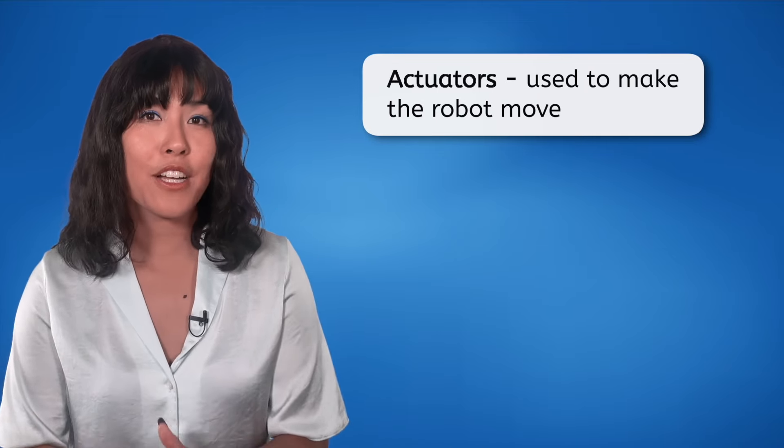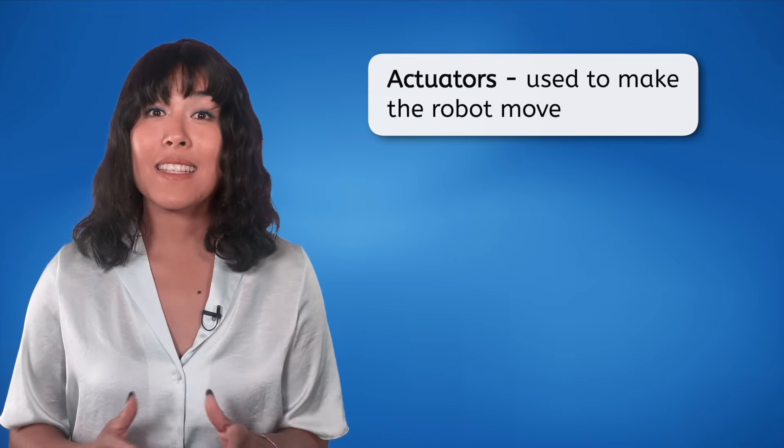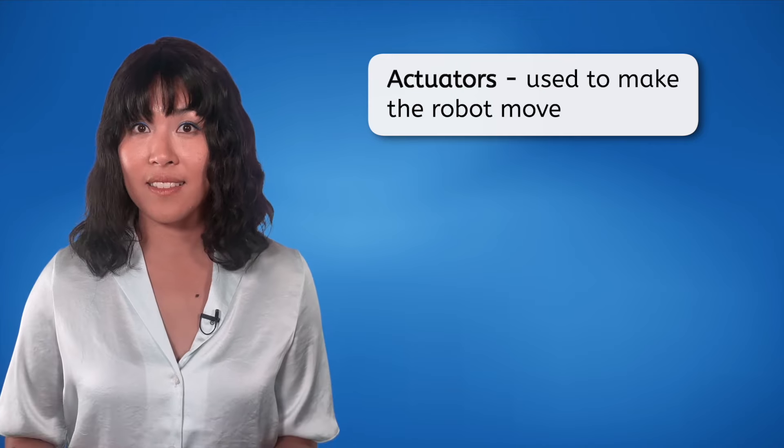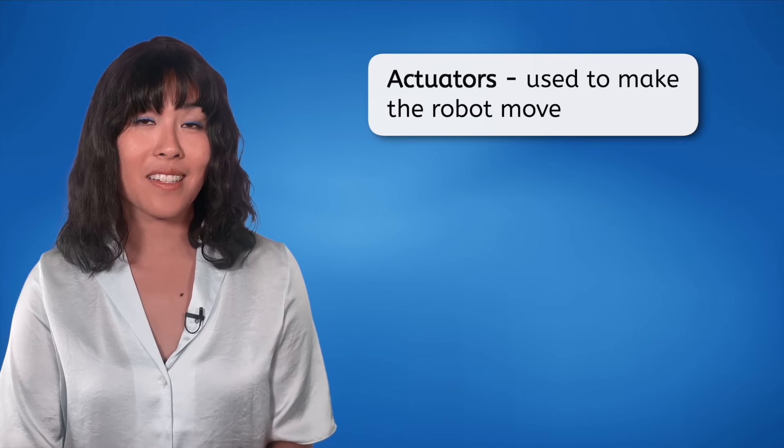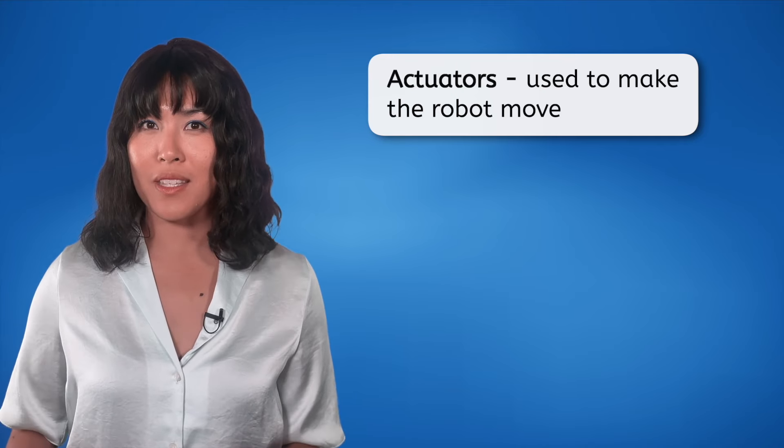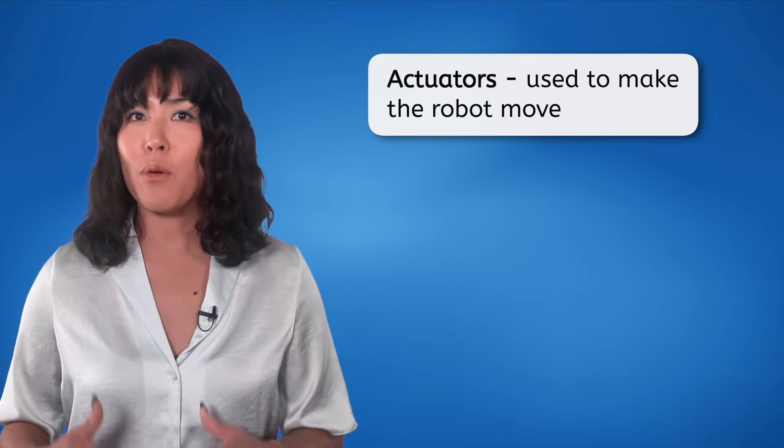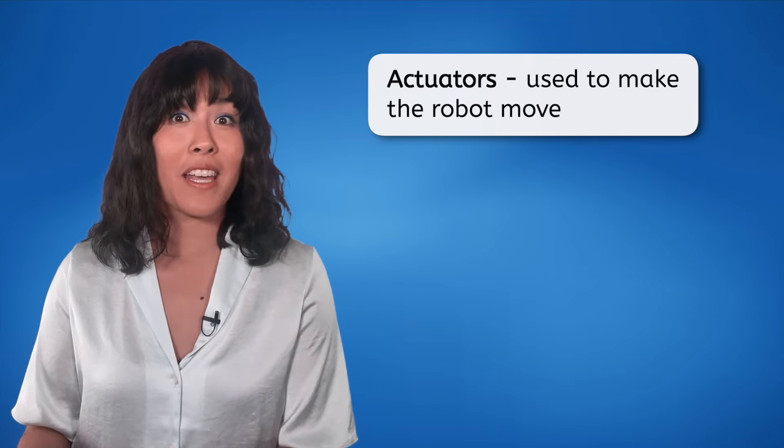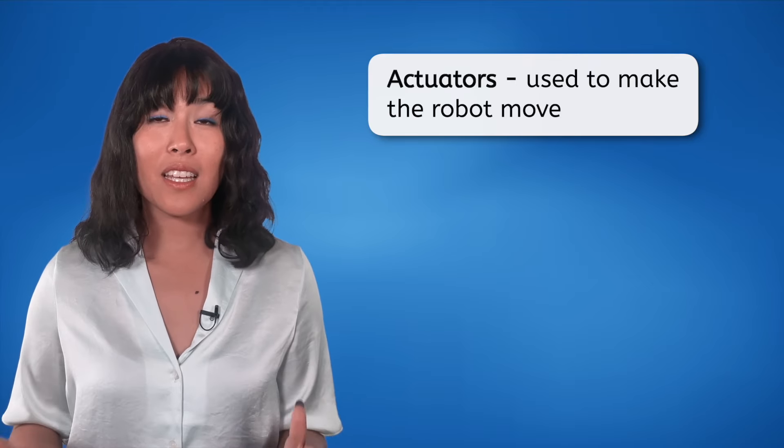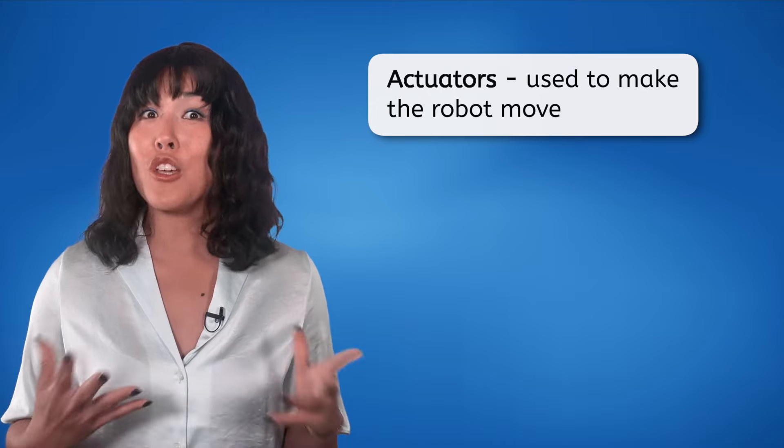Then, we have actuators. Once our robot senses its surroundings, it needs to act. Actuators are the components that allow this action, be it moving forward, turning, or even picking up an object. These are just like the muscles and tendons that help the human body move.